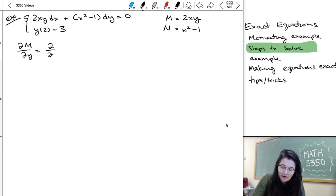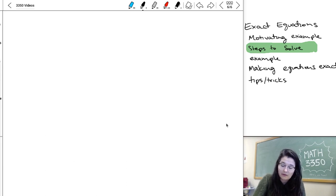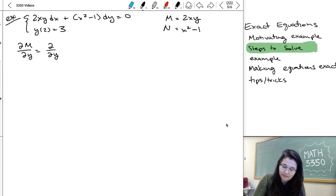So we're going to take the partial derivative with respect to y of m, the thing that was multiplied by dx. And that's going to be 2x. If you're a little rusty on your partial derivatives, you just treat everything except for y like a constant, take the derivative.